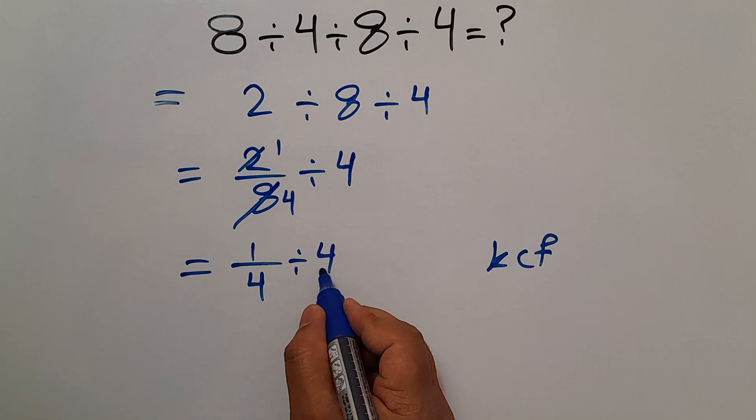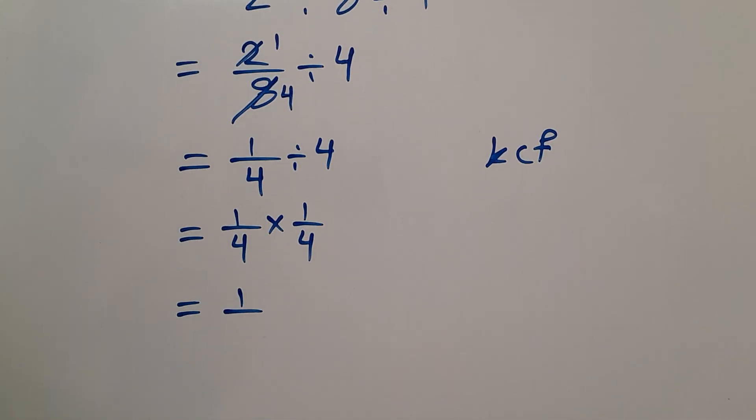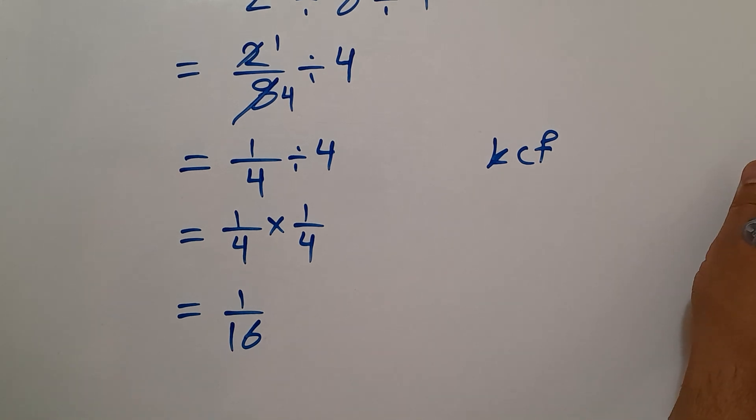And flip the second fraction. So we can write 1 over 4 times 1 over 4. This equals 1 over 4 times 4, which equals 16. So our final answer to this problem is 1 over 16.